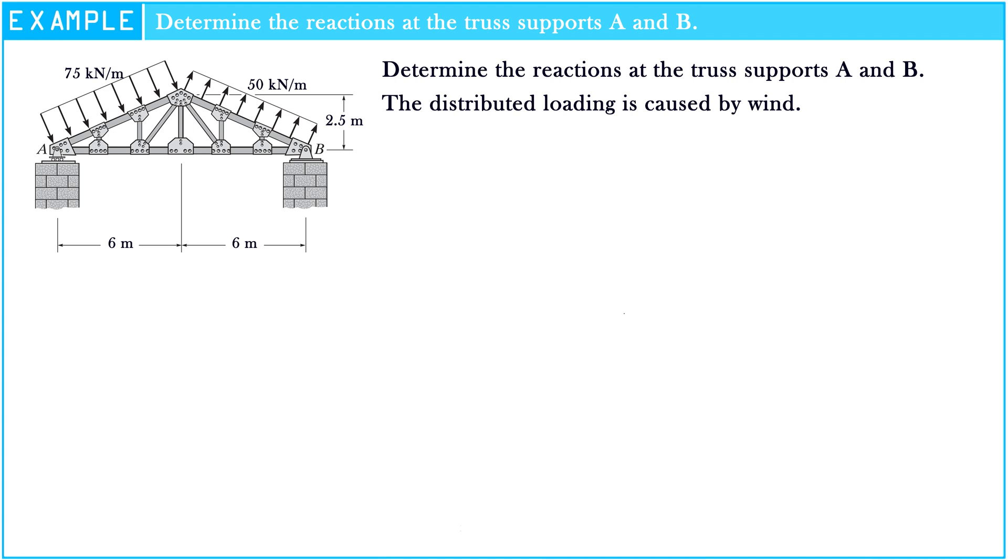First of all, we need to look at the figure at the left. We see the dimension of truss is 12 meters. The height is 2.5 meters. On the truss, wind load caused 75 kN per meter at side A and 50 kN per meter at side B.